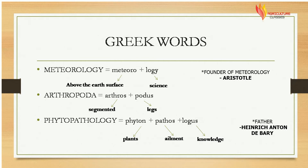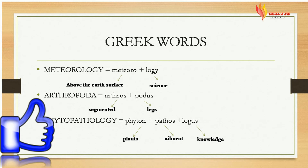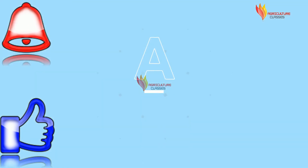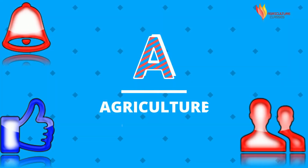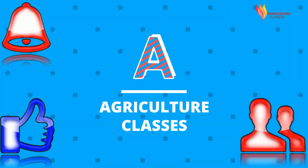And last is phytopathology, containing different words: phyton, pathos, and logis. Phyton means plants, pathos means ailment, and logis means knowledge. If you liked this video, don't forget to give a thumbs up, like, subscribe, and share. Press the bell icon to get instant notifications of my new videos.